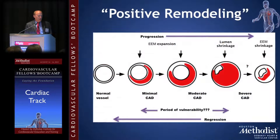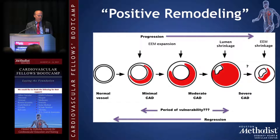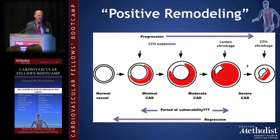And this is what happens: normal vessel, minimal coronary artery disease, moderate, severe, and then finally very severe with likely MI.